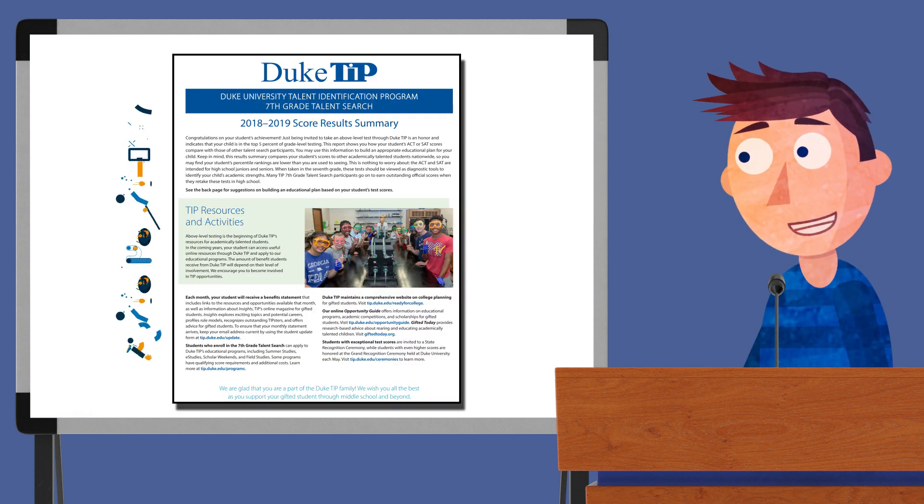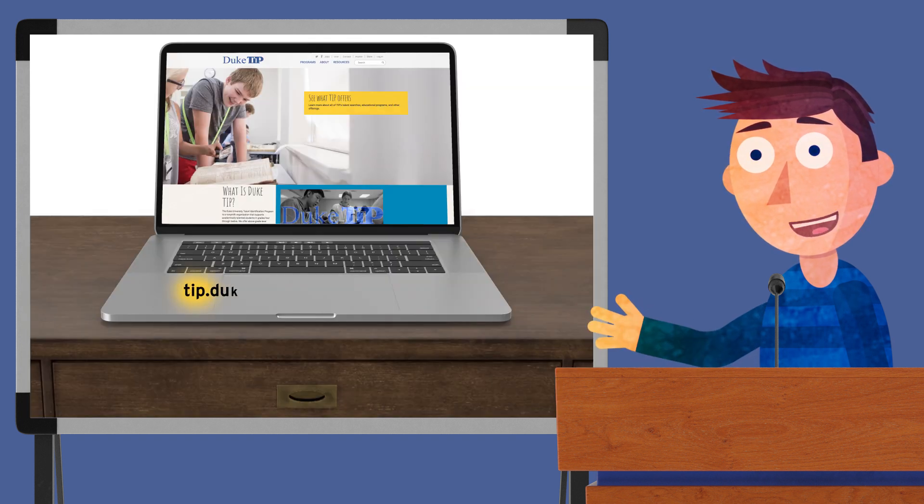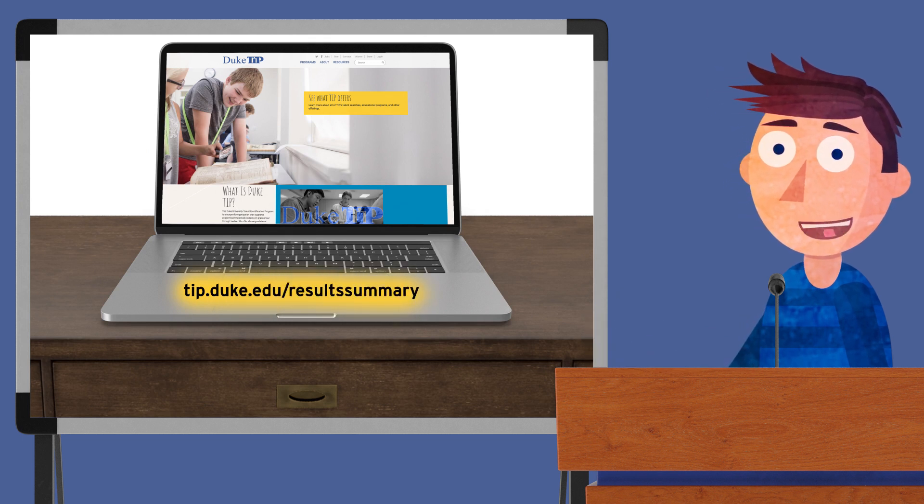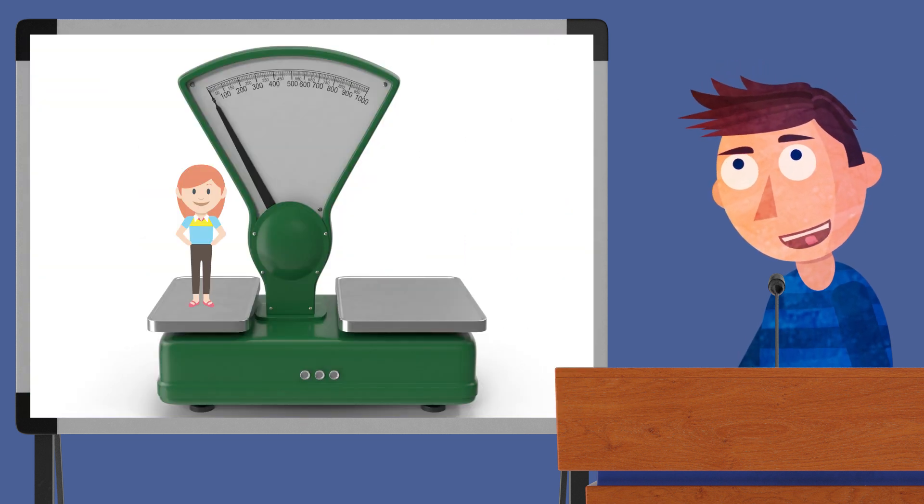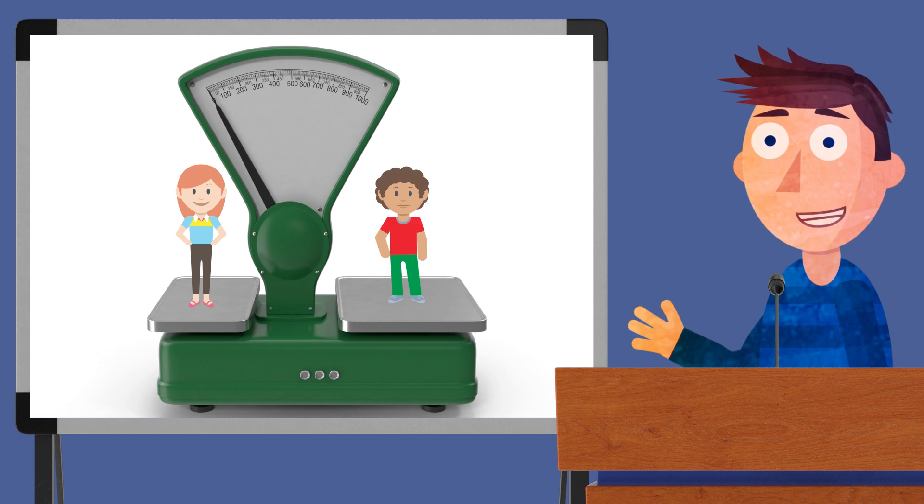The second score report is something DukeTip puts together itself, so that's the one we'll concentrate on here. We call it the score results summary, and it should be available for download on our website in early April. We'll also mail it to you, along with a Certificate of Merit, in August. This report compares your child's scores to those of other DukeTip students taking the test through the 7th grade talent search.